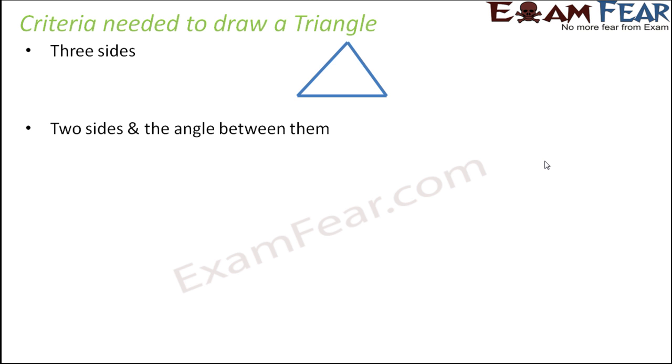Even if you give information only about the length of three sides, we can get the triangle. If you give information about two sides and the angle between them, something like this, you know these two sides and you also know the angle between them. So with this much information also, you can draw a triangle.